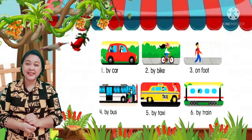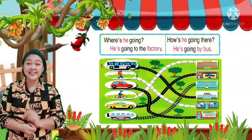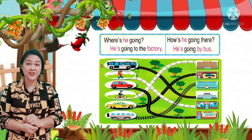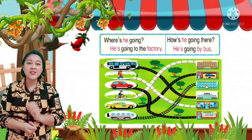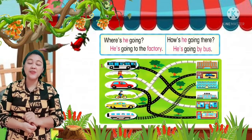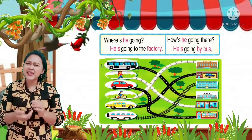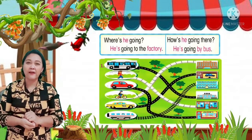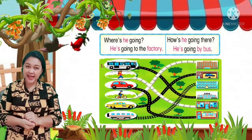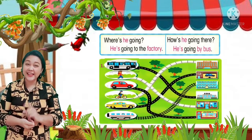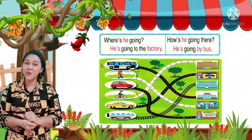Now let's try to answer this sentence structure. Where's he going? He's going to the factory. How's he going there? He's going by bus.